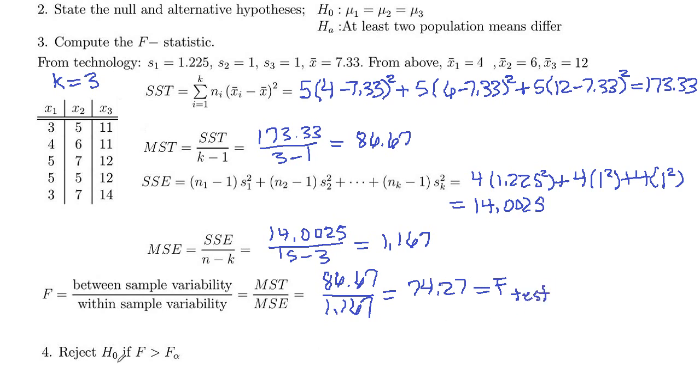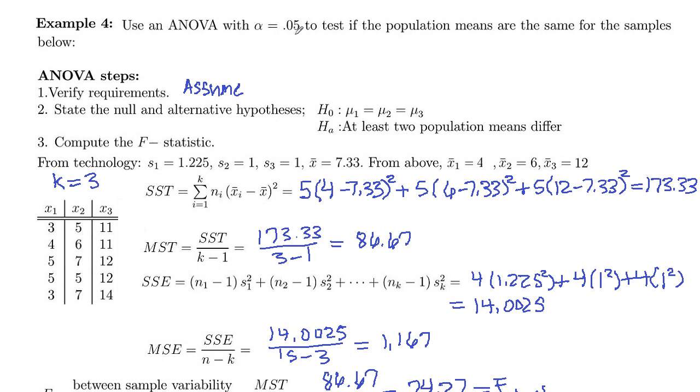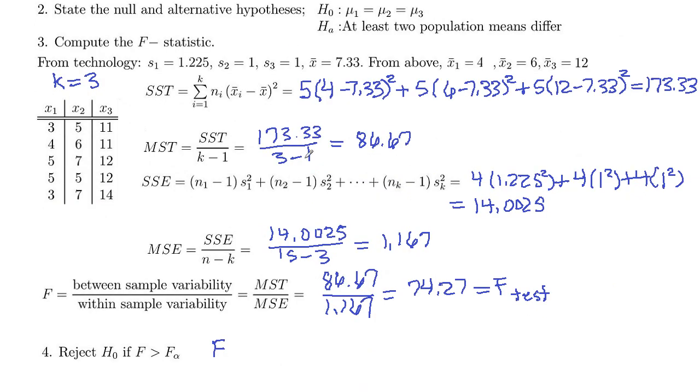So we're going to reject H0 if F is greater than F alpha. So our F alpha here, this is a test at the 0.05 confidence level. Alpha is 0.05 there. And then our degrees of freedom here. V1 is 2, that's this 3 minus 1. And V2 is 12, 15 minus 3.